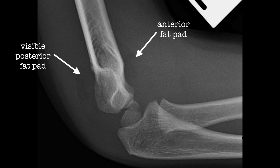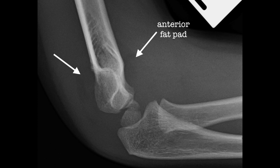The presence of a posterior fat pad on x-ray is pathognomonic. If you find no fracture line, you must still treat it as a fracture — it is likely to be an occult fracture. However, this is not true when there is displacement of the anterior fat pad alone, as displacement of this fat pad may be due to an effusion. Subtle fractures are very easy to miss.